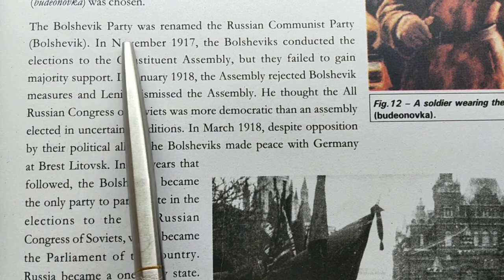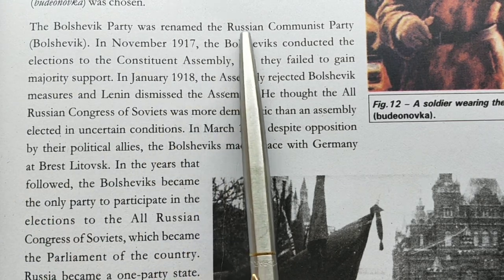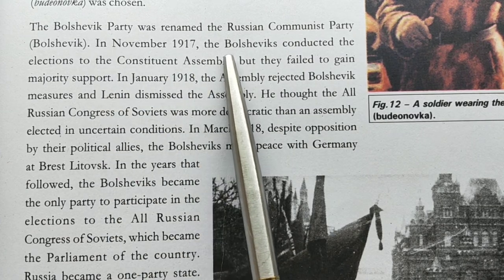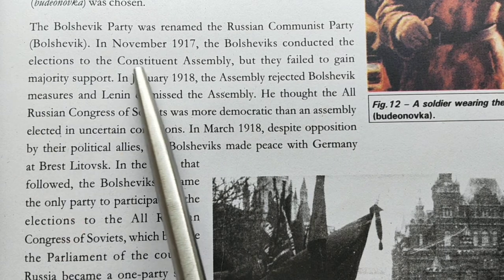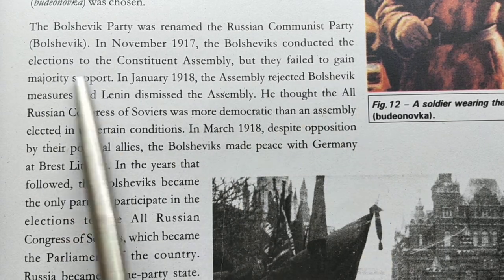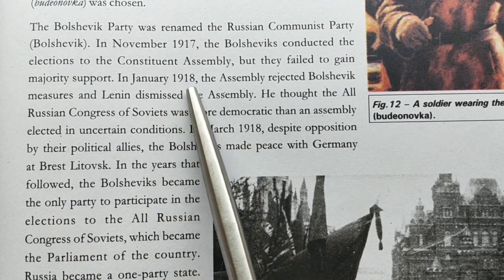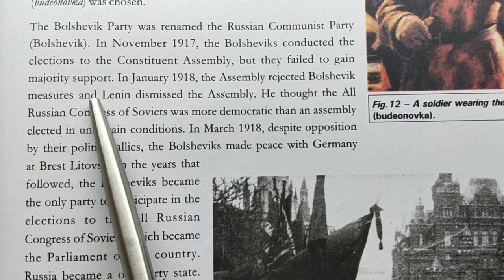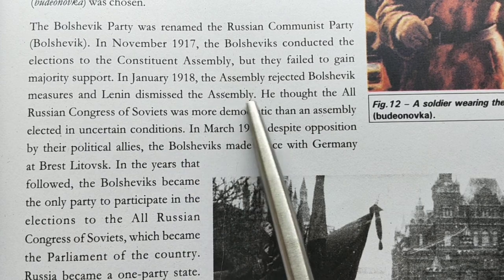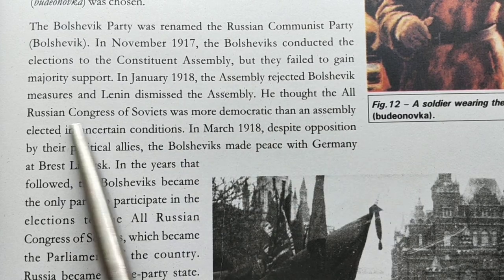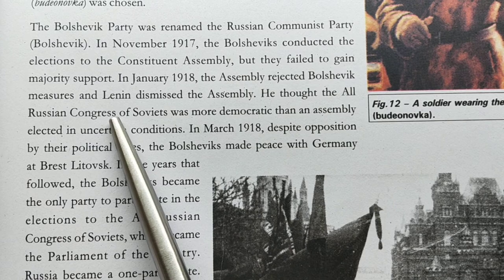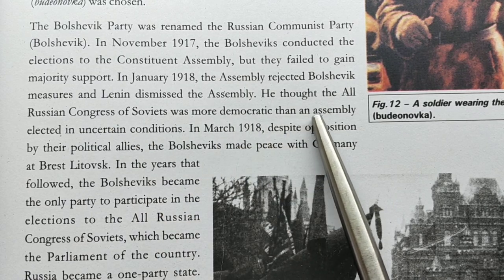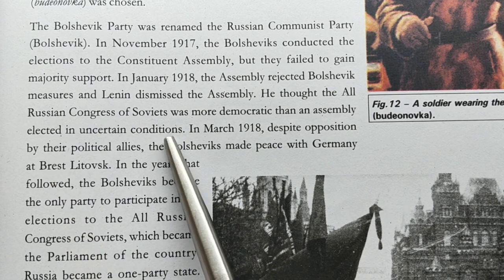The Bolshevik party was renamed the Russian Communist Party in November 1917. The Bolsheviks conducted elections to the Constituent Assembly but failed to gain majority support. In January 1918, the Assembly rejected Bolshevik measures and Lenin dismissed the Assembly. He thought that the All Russian Congress of Soviets was more democratic than an Assembly elected under uncertain conditions.